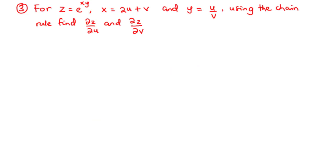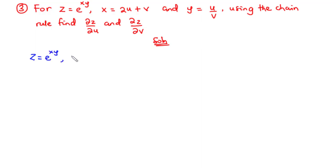In the next example, for z equals e to the power xy, x equals 2u plus v, and y equals u over v. Using the chain rule, we are going to find the partial derivative of z with respect to u and the partial derivative of z with respect to v. We can express y as u times v to the power negative 1.